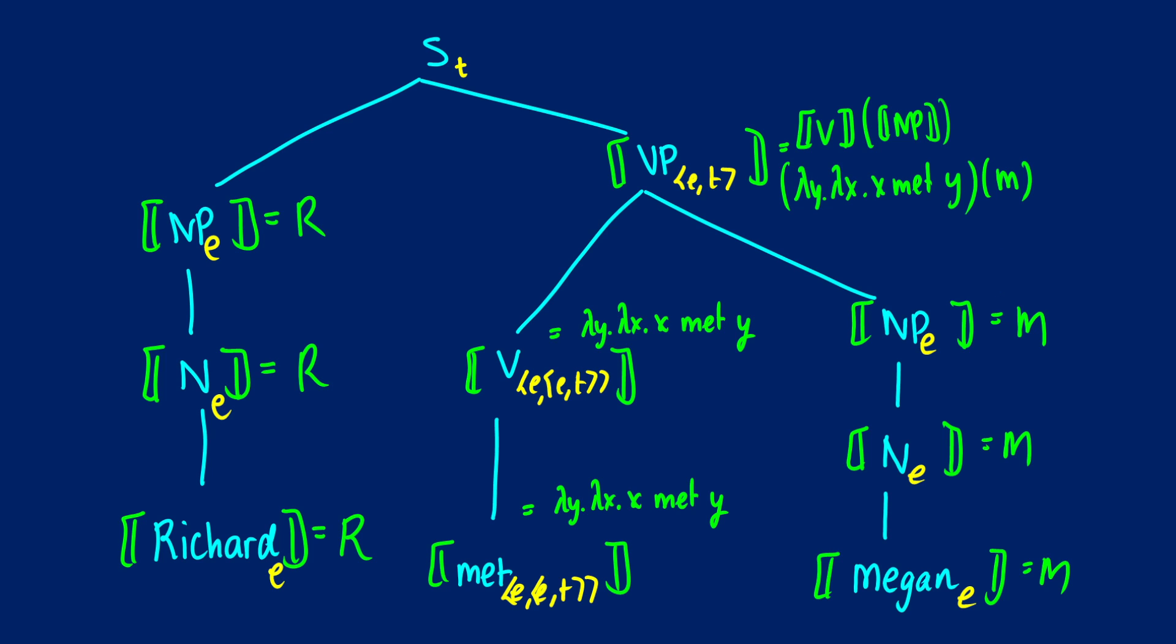So the verb phrase is going to consist of the verb, the function acting on the noun phrase. So this is going to be lambda y dot lambda x dot x met y and then we're going to apply the function M to it. So what's going to happen is that M is going to replace every single position that y is in. So our final result for this is going to be lambda x dot x met M. So that's the meaning of the verb phrase. When we're at the phrase met Megan it's lambda x dot x met Megan. It's what we would expect.